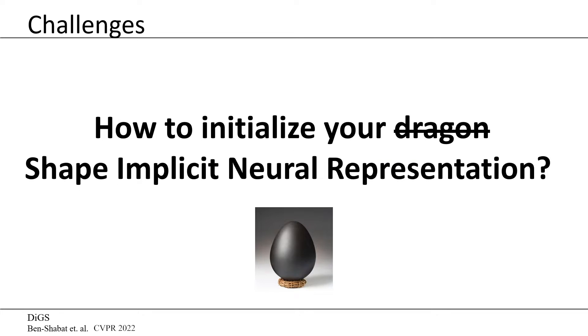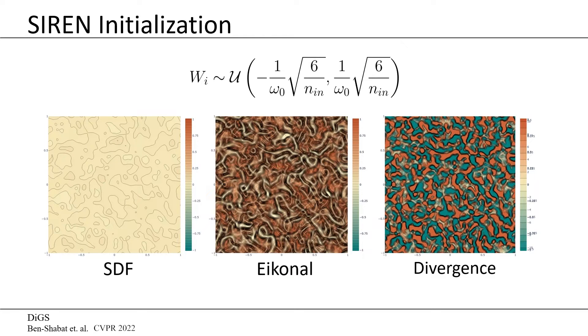This leaves the question of how to properly initialize the network. The initialization proposed by Sitzmann et al. makes the input of each sine activation be Gaussian normal distributed and the output of each sine activation be arcsine distributed. However, for closed shapes and shape space learning, we witnessed that this sometimes results in ghost geometries, especially without normal vector supervision.